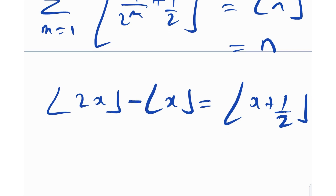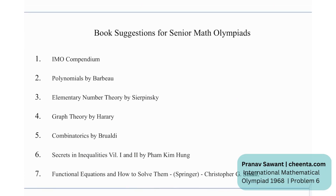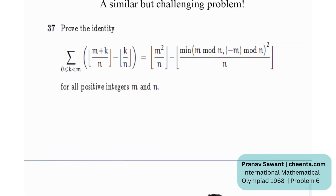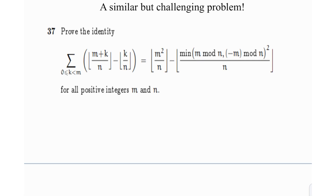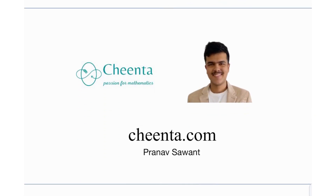I hope you learned something from that. We also have some book recommendations for senior math olympiads: Compendium of Problems, Barbeau's Elementary Number Theory, Bondy and Murty's Graph Theory, Brualdi's Combinatorics, Secrets in Inequalities, and Functional Equations by Christopher G. Small. At the end, there's a similar but challenging problem involving floor functions — try exploring small cases, as we did here, and let me know if you solve it. See you in the next video!